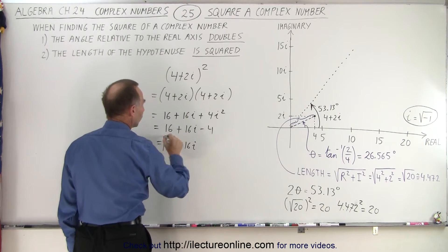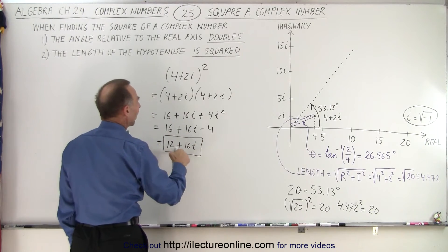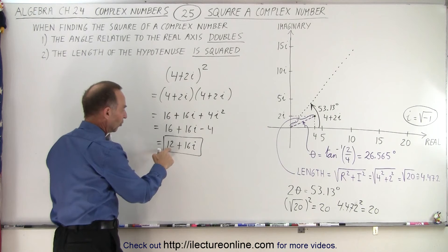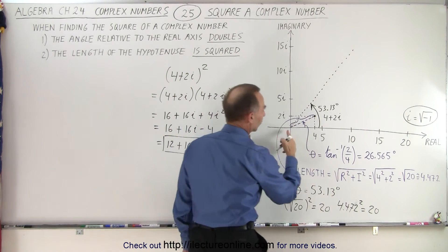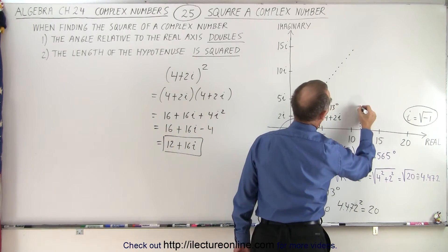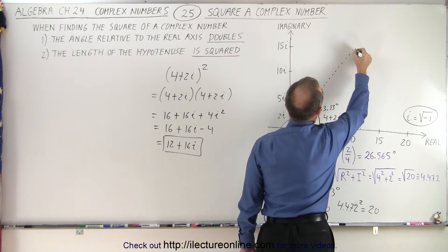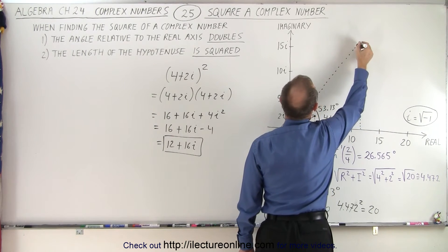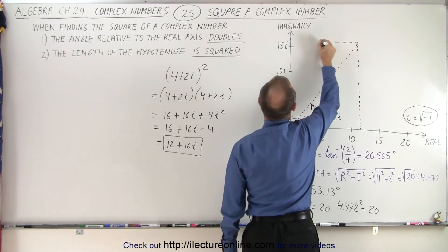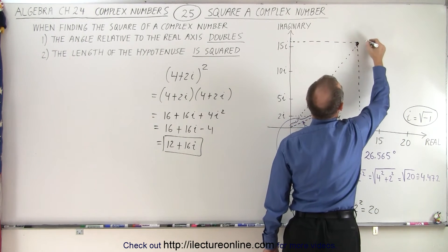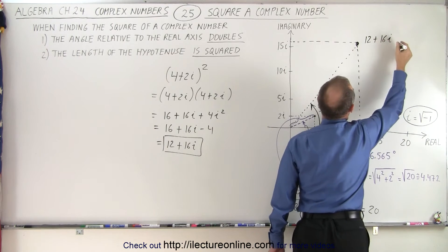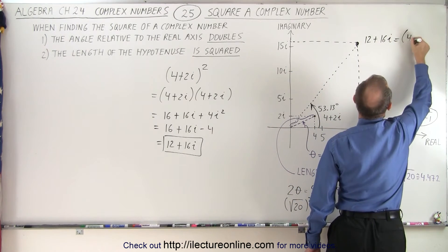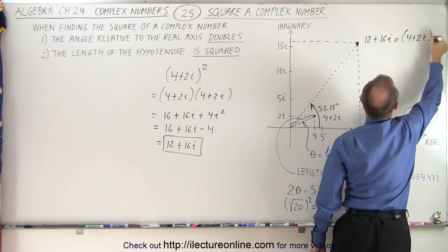So 12 plus 16i is the squared value of our original complex number. Notice the distance from the origin is 12 in the real direction and 16 in the imaginary direction. So 12 would be right about here on the x-axis, and going up we reach 16i, putting us at the point 12 plus 16i, which equals the number 4 plus 2i quantity squared.